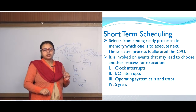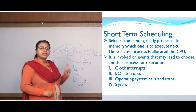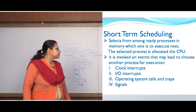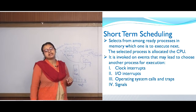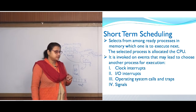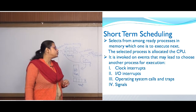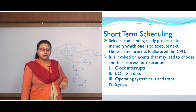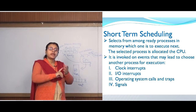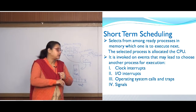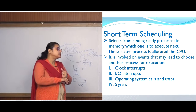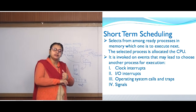The short term scheduler or CPU scheduler selects from among ready processes in memory which one is to execute next, and the selected process is allocated the CPU. It is invoked on events that may lead to choosing another process for execution — one process is running, it is taken out, and another process will run. These events include call interrupts, clock interrupts, IO interrupts, operating system calls and traps, and different signals.